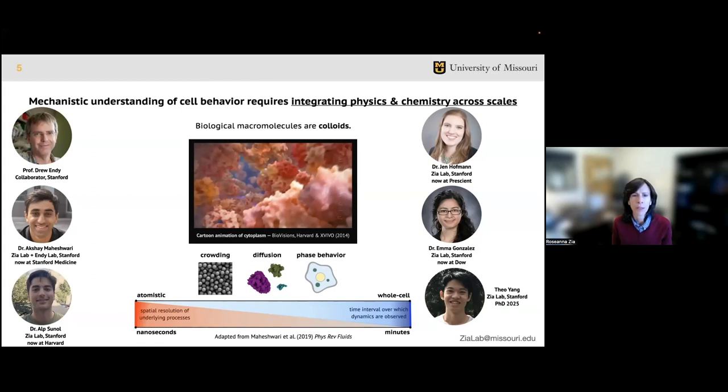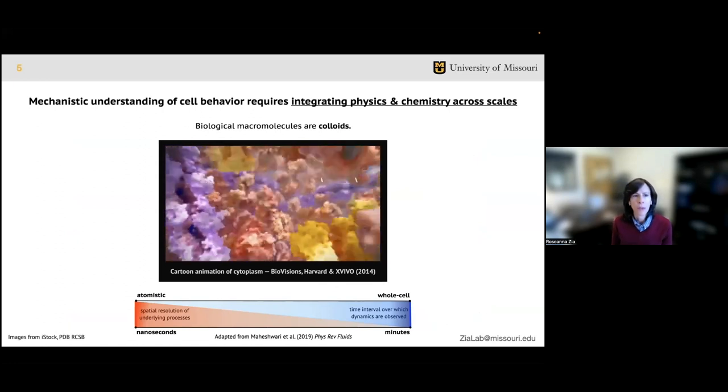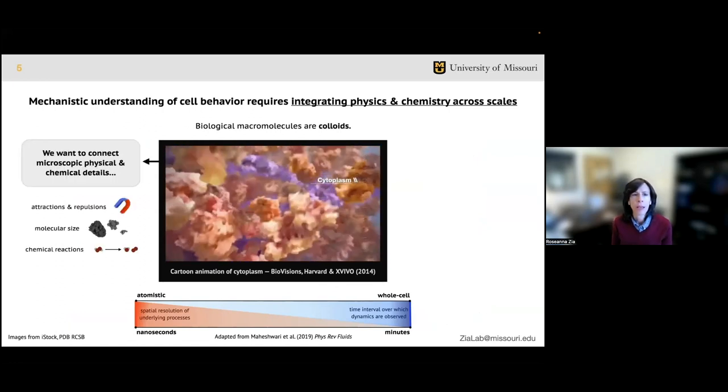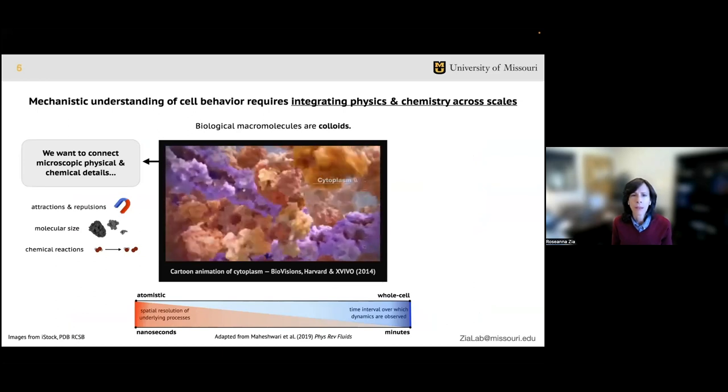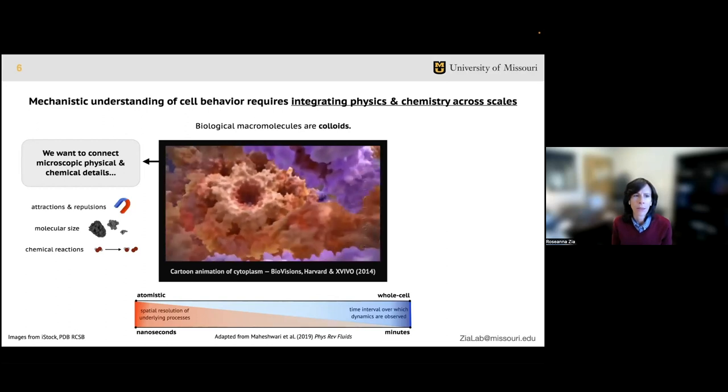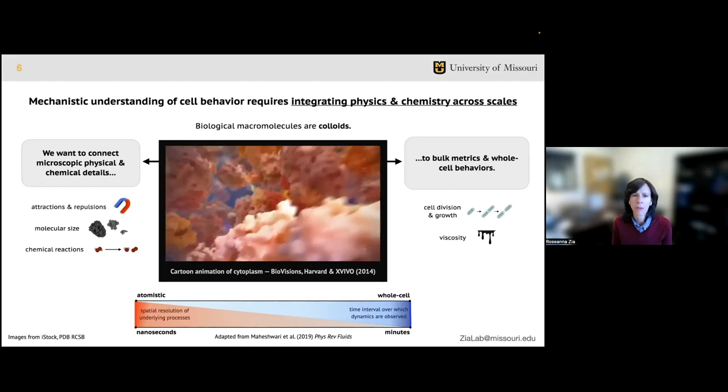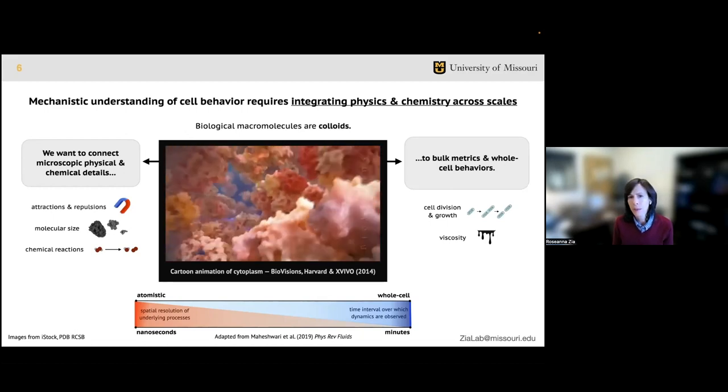Together we mentored several PhD students including Akshay Maheshwari, who drove much of our early ideas, and Alp Sunal, Jennifer Hoffman, Emma Gonzalez, and most recently Theo Yang co-advised by Dan Oros. By building models at this colloidal scale, we can connect physical and chemical details about how individual molecules interact - including if they attract or repel, their size, and if they chemically react - to whole cell behaviors we want to predict and engineer, such as how fast the cell grows and divides, or bulk properties like viscosity.